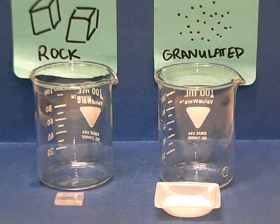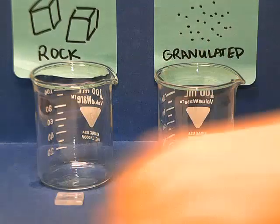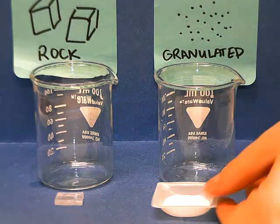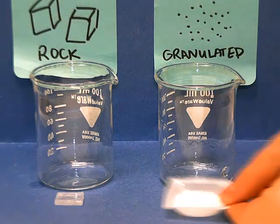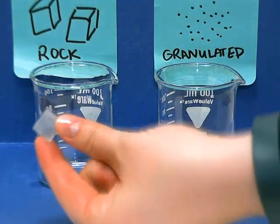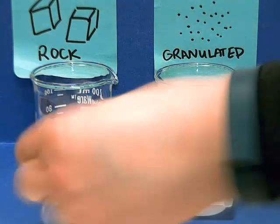Now we're going to see the effect of surface area on the rate of dissolving. I've got two different types of salt here. I've got your typical granulated salt, and then I've also got a big chunk of what's called rock salt. This is just one big chunk of salt.